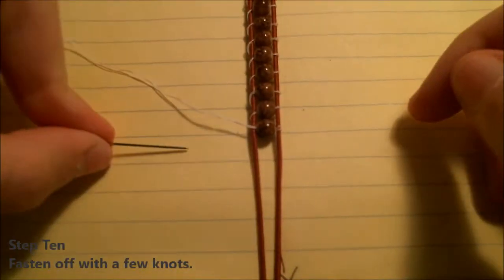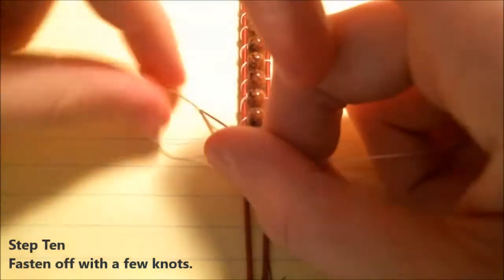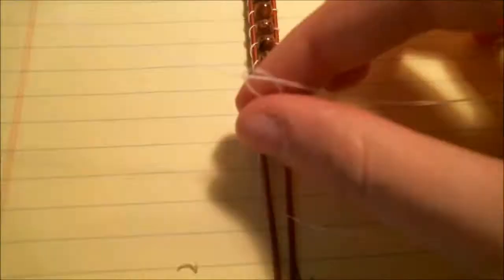When you've reached the end, tie it off with a knot. I do mine by going under the first piece of elastic, leaving a small loop, and threading my needle through. I repeat this four to five times so I have a secure bunch of knots.